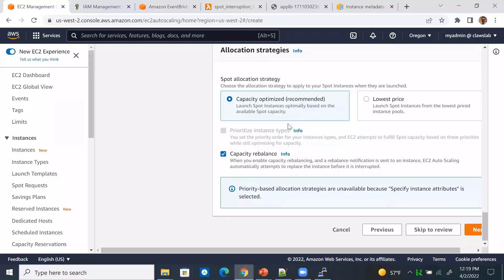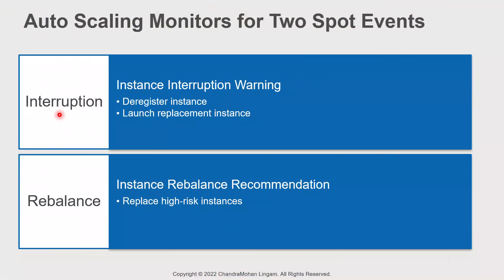EC2 also publishes an early warning event when capacity is low on a specific spot pool. When you enable this option, autoscaling will proactively replace high-risk instances by launching instances from another spot pool. So autoscaling monitors for two different spot events: the interruption warning event to automatically deregister an interrupted instance and launch a replacement, and the rebalance recommendation event to proactively replace high-risk instances.